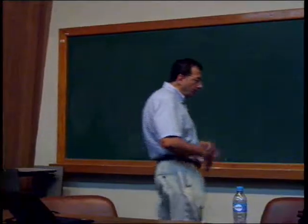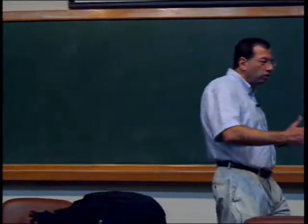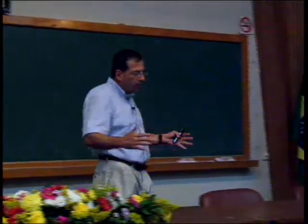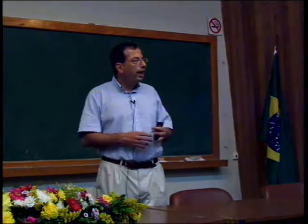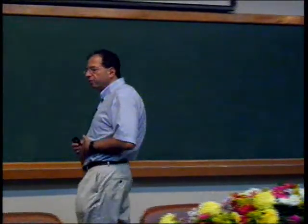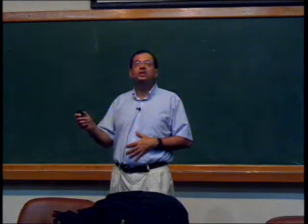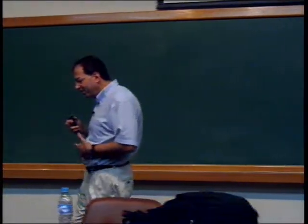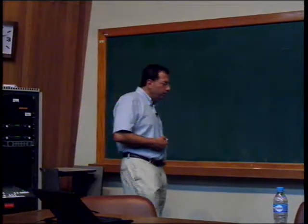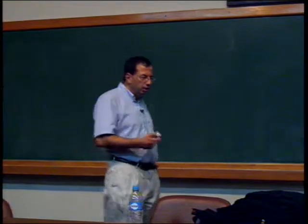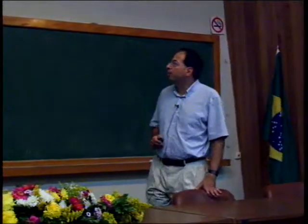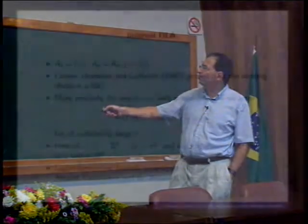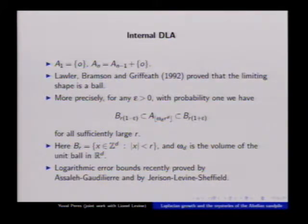The original paper just showed that it's asymptotically a disk. Given a number N, you find the radius of a ball which will have the same number of points as N, and then the set A_N will be contained in a slightly smaller ball and contained in a slightly larger ball, where slightly means multiplying by (1 - epsilon) or (1 + epsilon). This has since been made more precise. In two dimensions, after N particles have arrived, the radius is a constant times root N, and the fluctuation was first proved by Lawler to be at most N^{1/6}. Very recently in two parallel works — one by Jerison, Asselah and Gaudilliere, and another by Levine, Sheffield, and Jerison — the correct order of fluctuations was established, which is logarithmic in two dimensions.